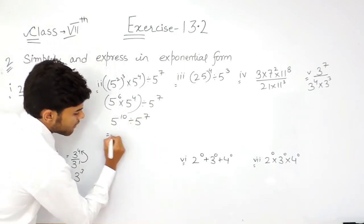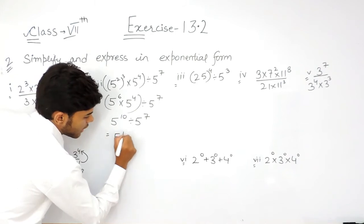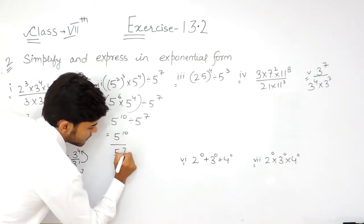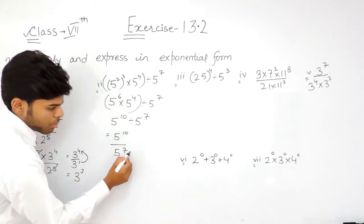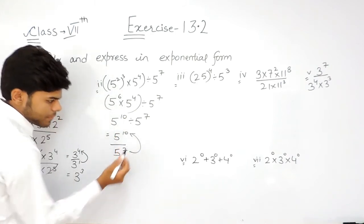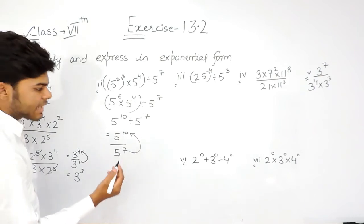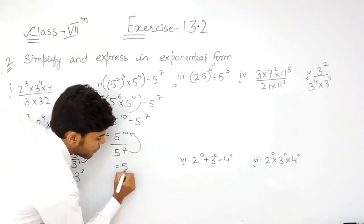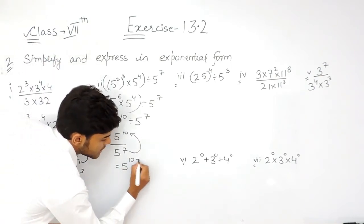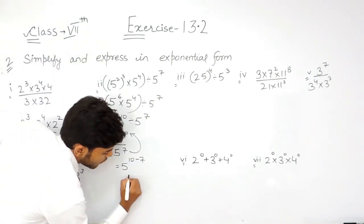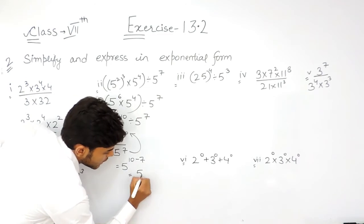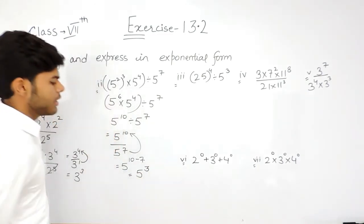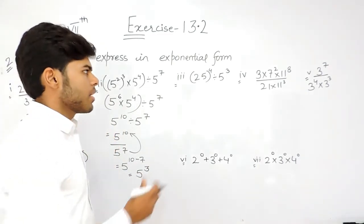Now, we can write this as 5 to the power 10 upon 5 to the power 7. This will go in the numerator, its sign changes. So it will be 5 to the power 10 minus 7, or we can say that it will be 5 to the power 3. So this will be the answer.